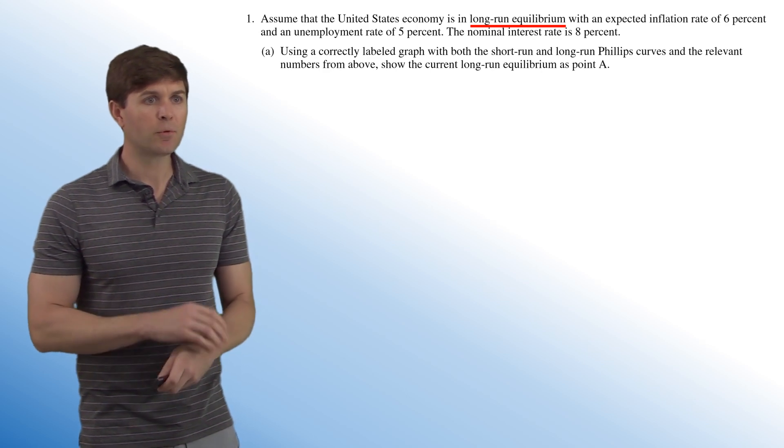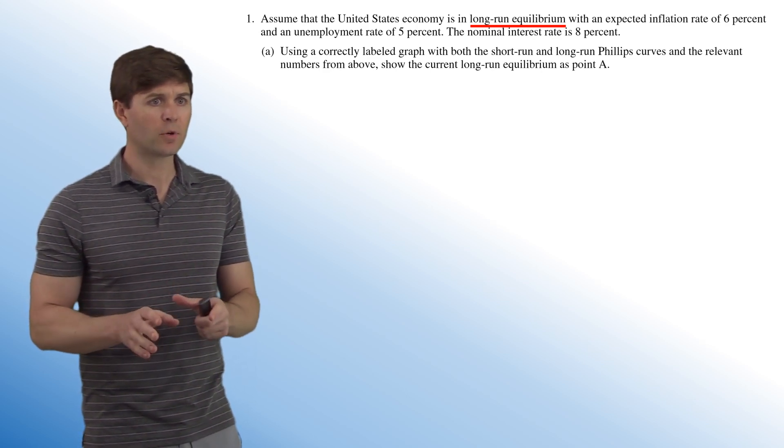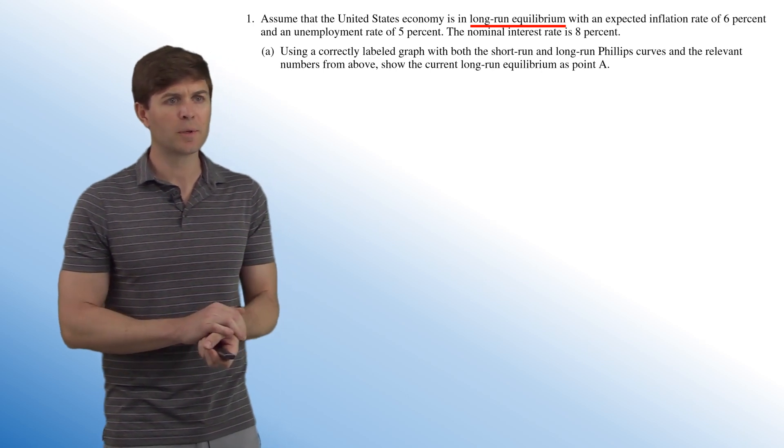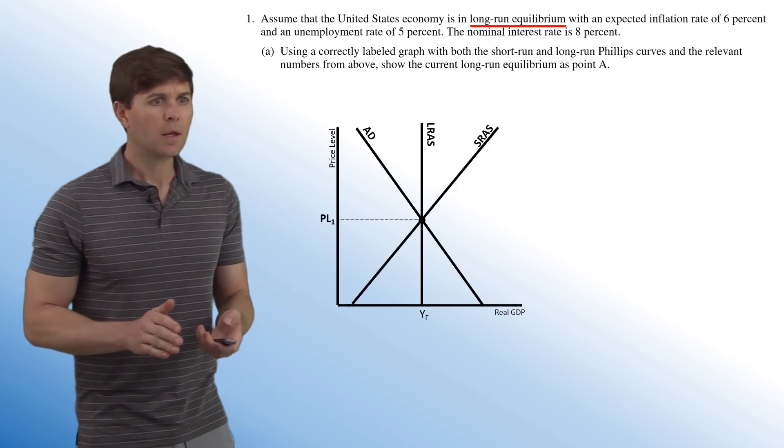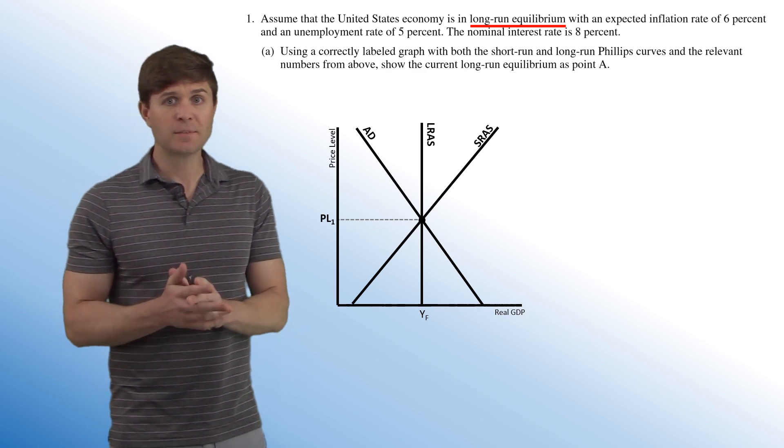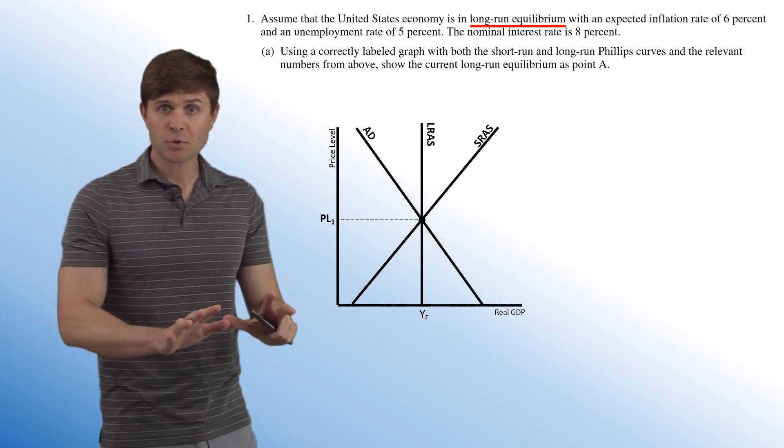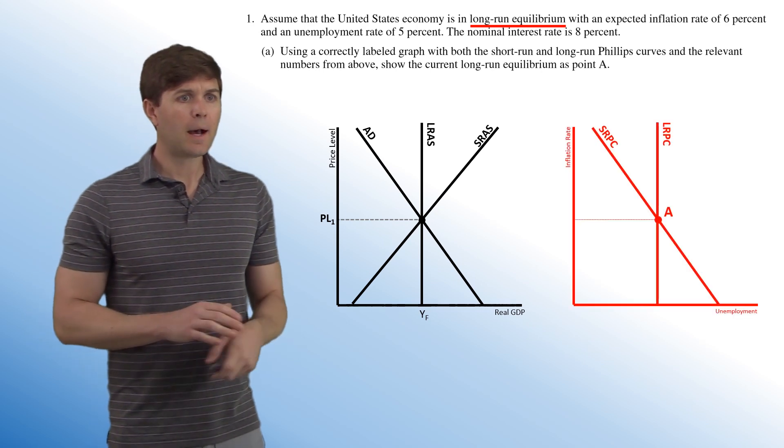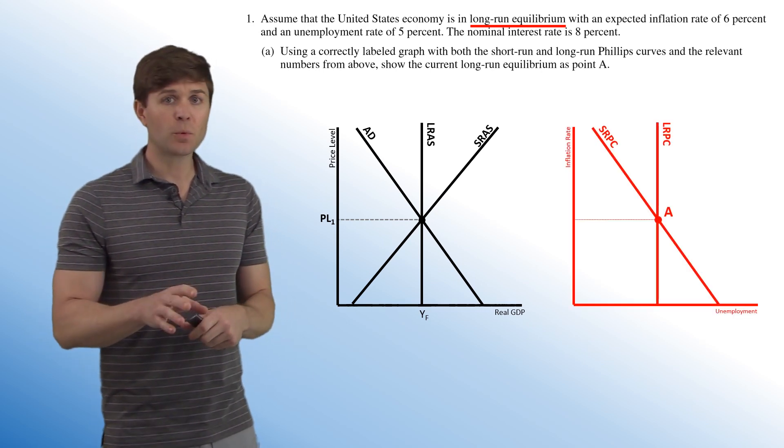Using a correctly labeled graph with both the short-run and long-run Phillips curve and the relevant numbers from above, very important, show the current long-run equilibrium as point A. So I'm going to start with the ASAD curves, not that you have to draw this, but just to explain where we're at.